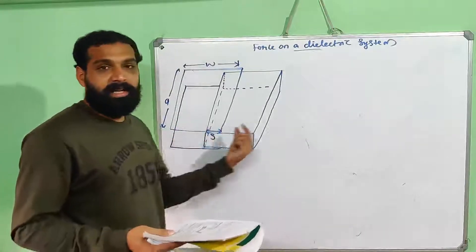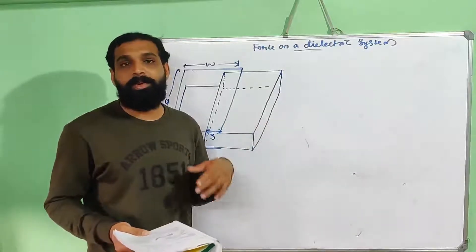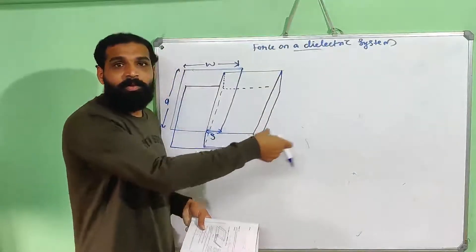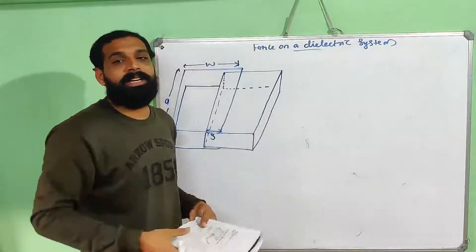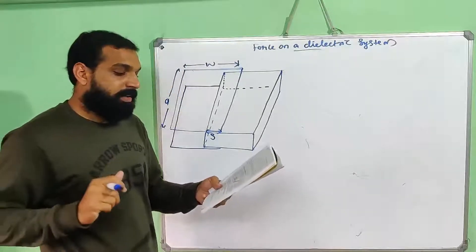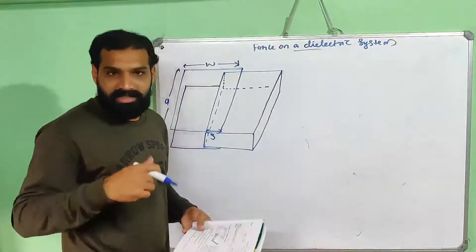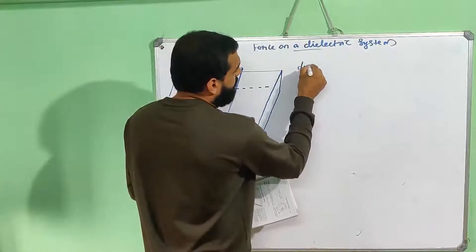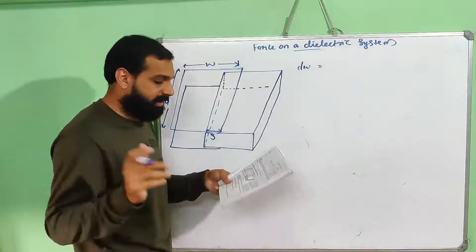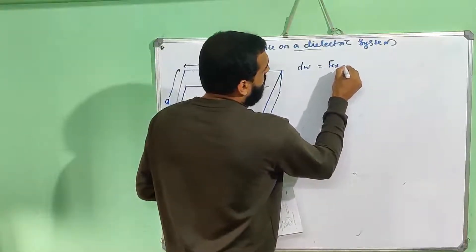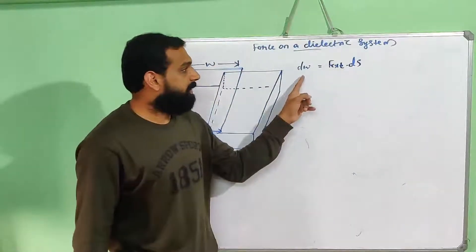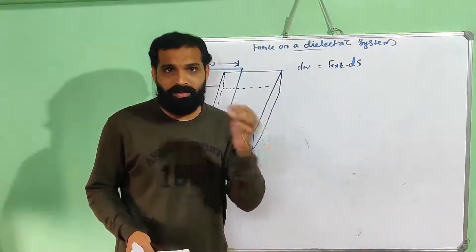Now, the small work done to pull the slab through a small distance ds is given by: work done equals F_external dot ds. That means drag the slab a small distance. Work done equals F_external dot ds.